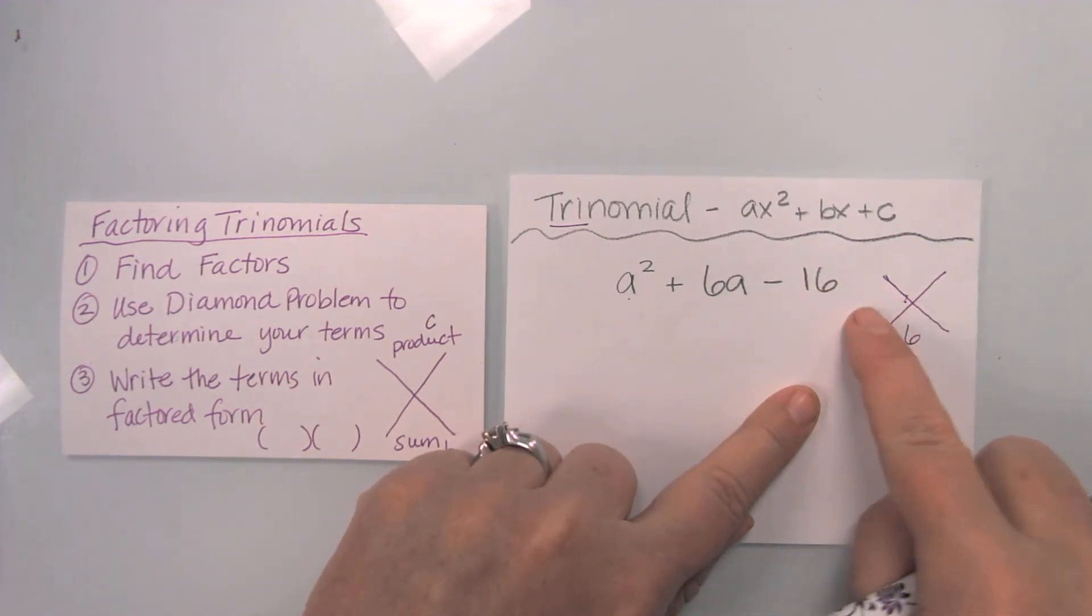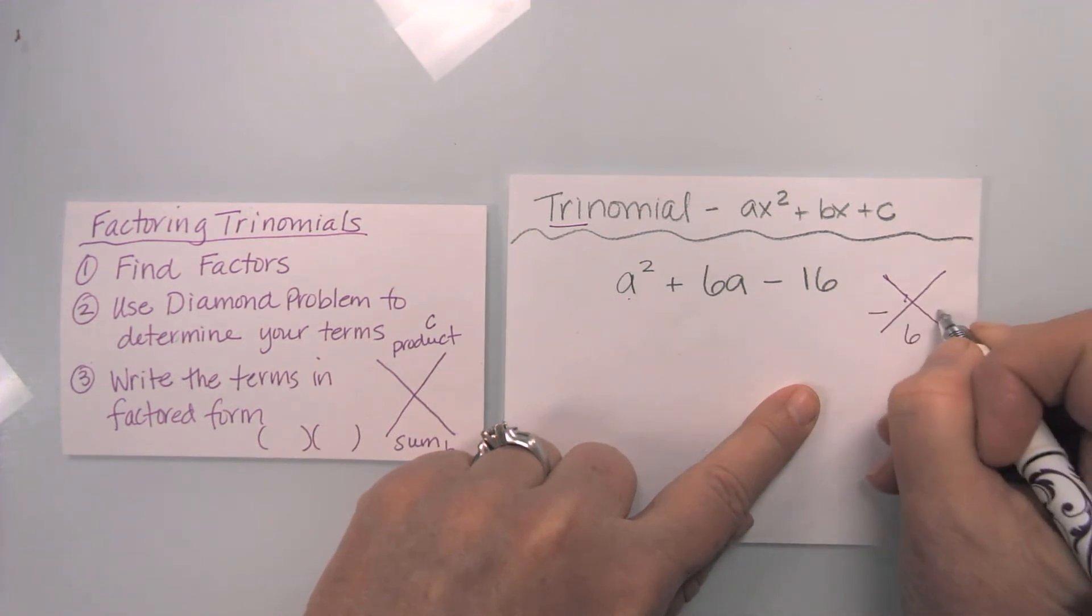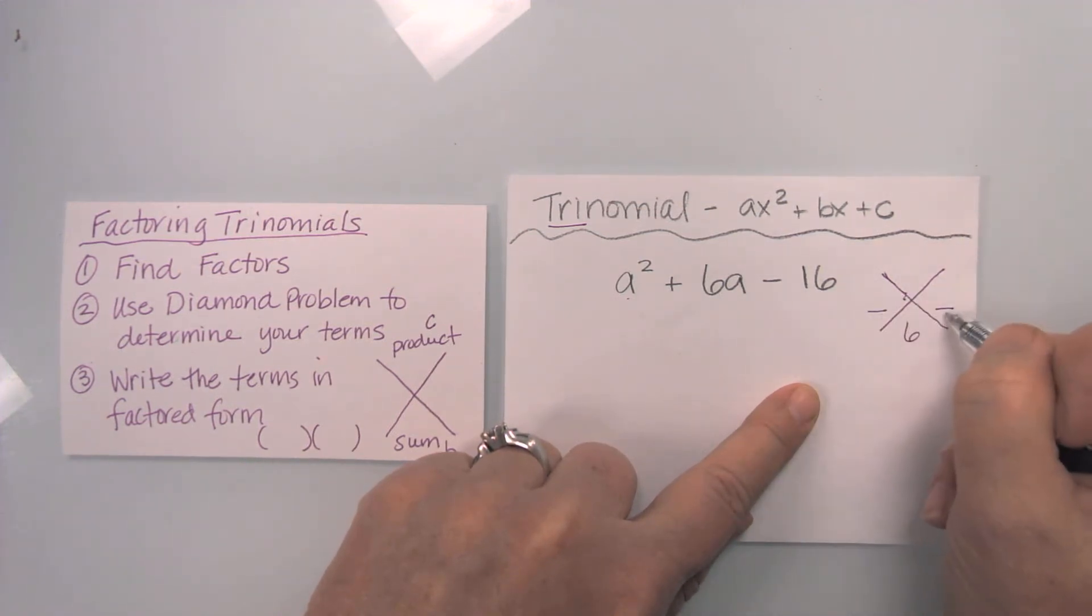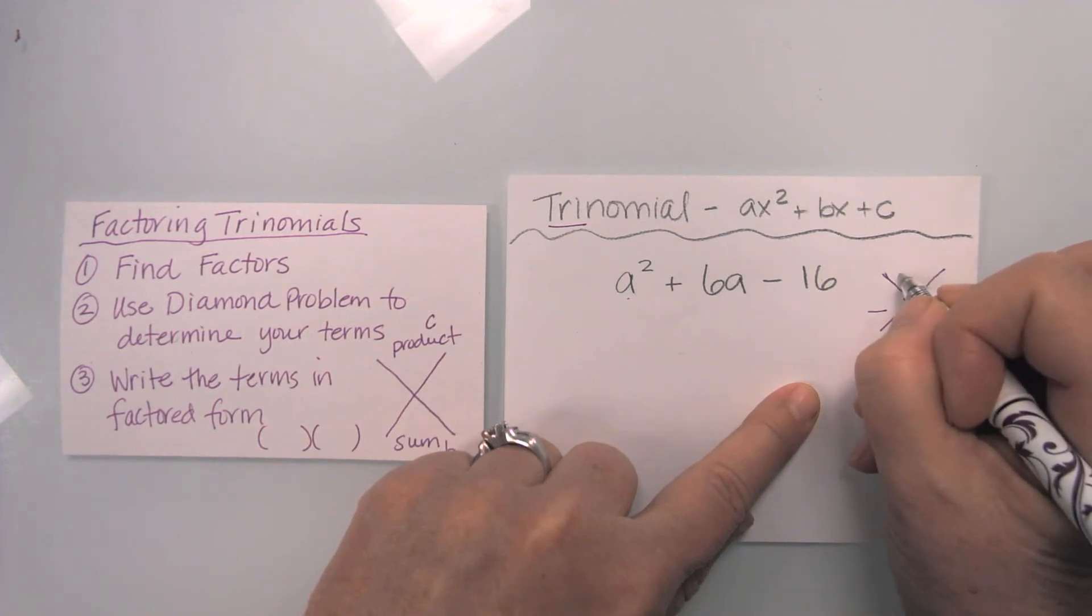When I multiply my two terms together, so this is what I'm looking for, I'm looking for my two terms. When I multiply them, they're going to equal negative 16.